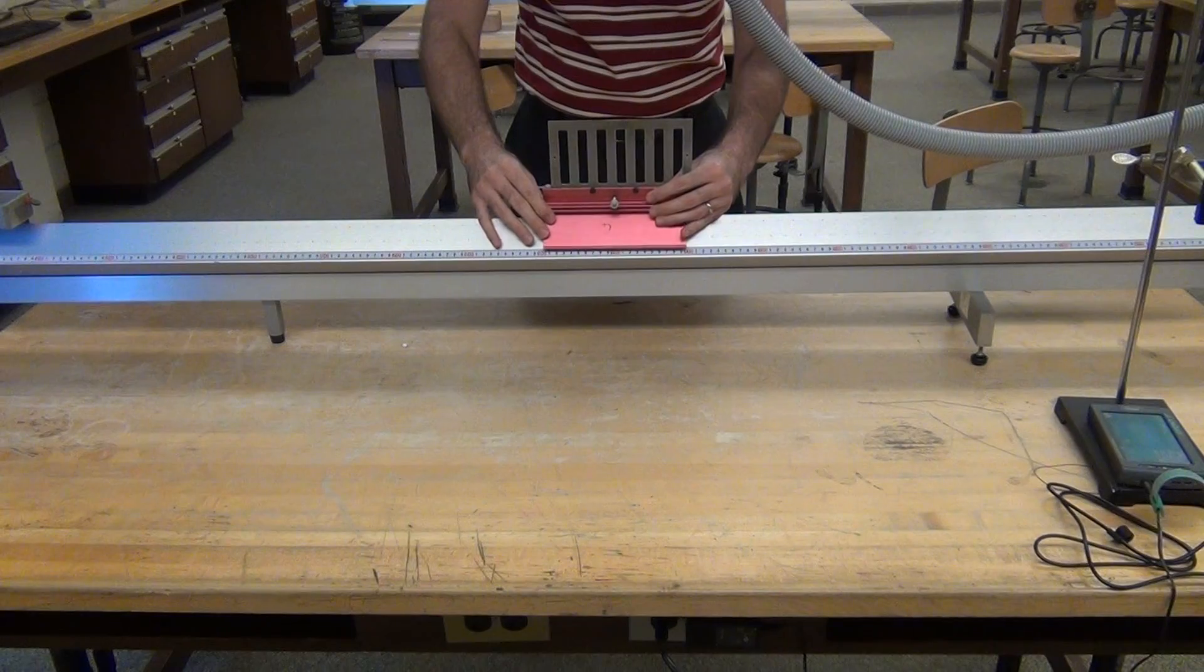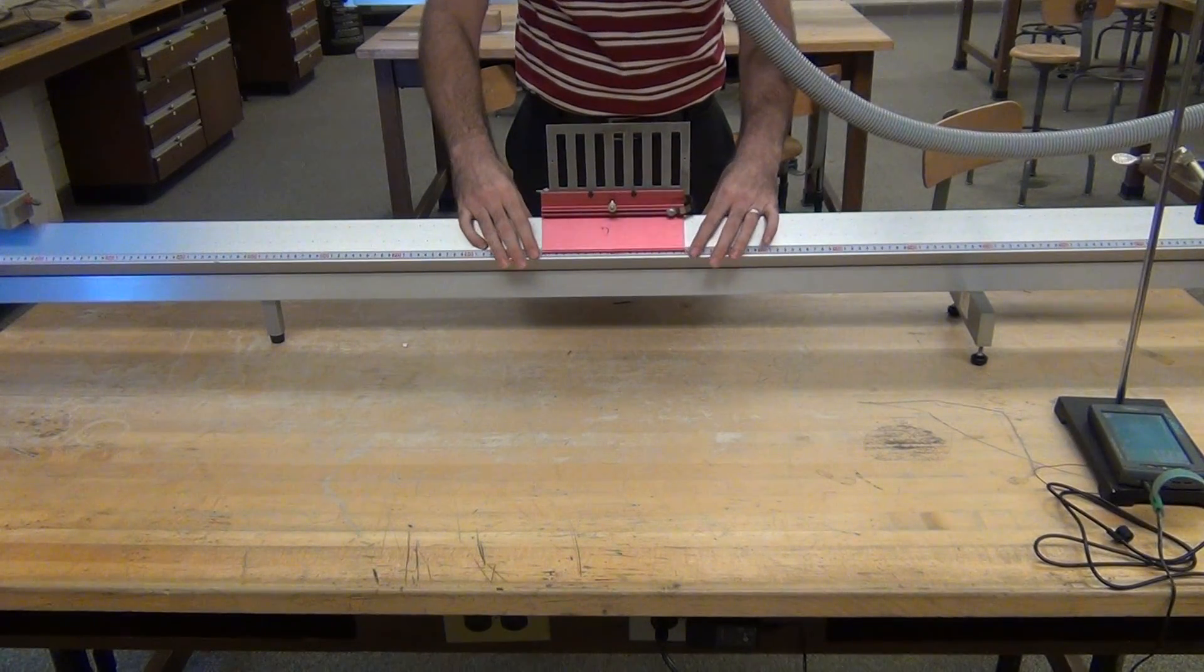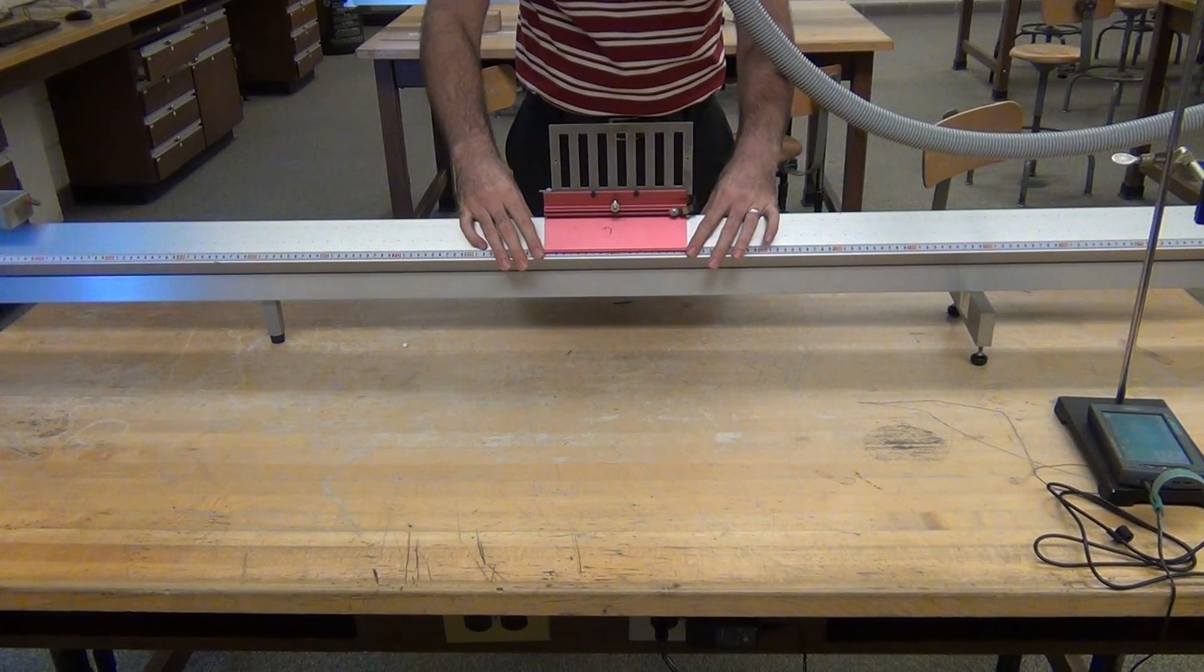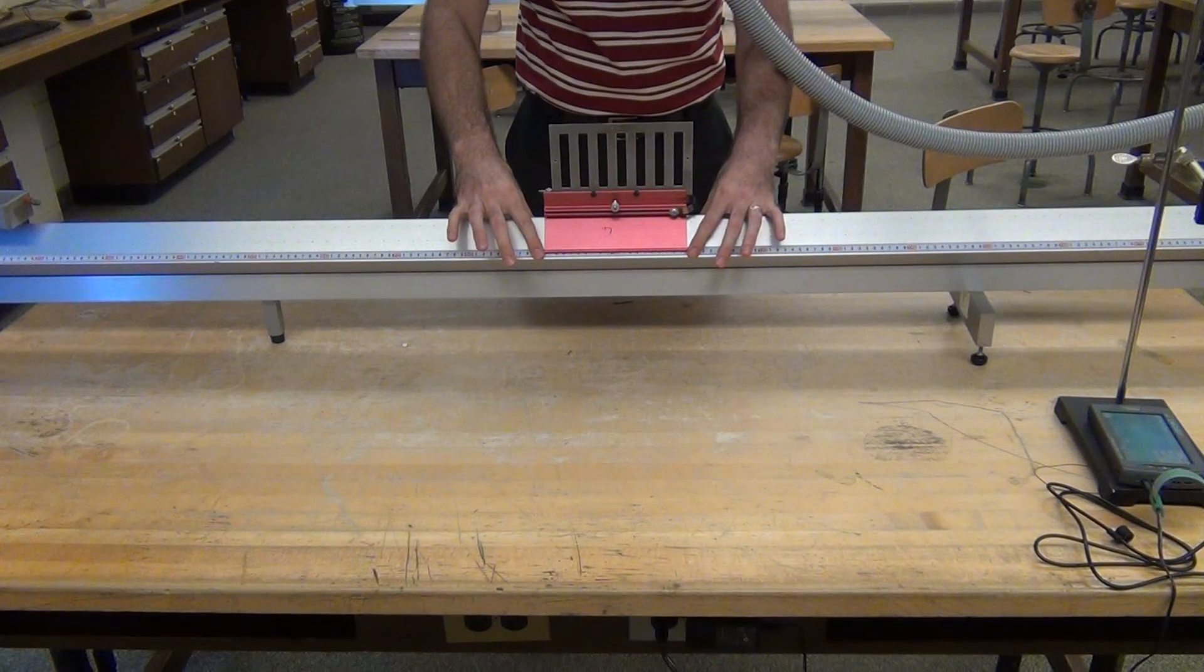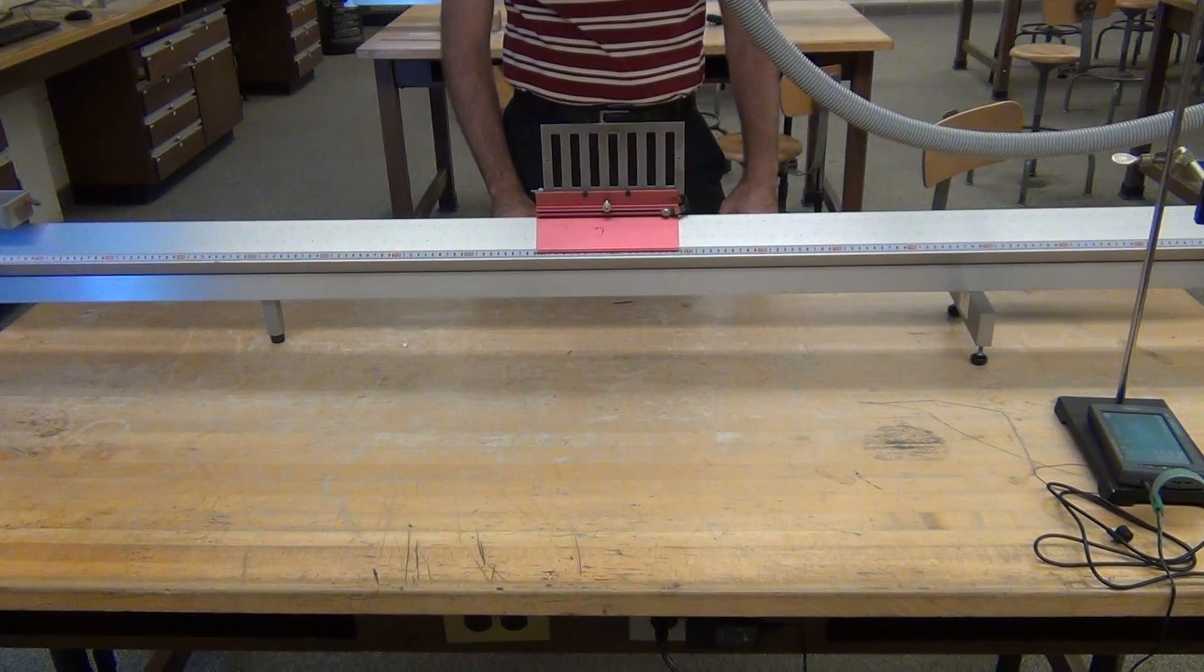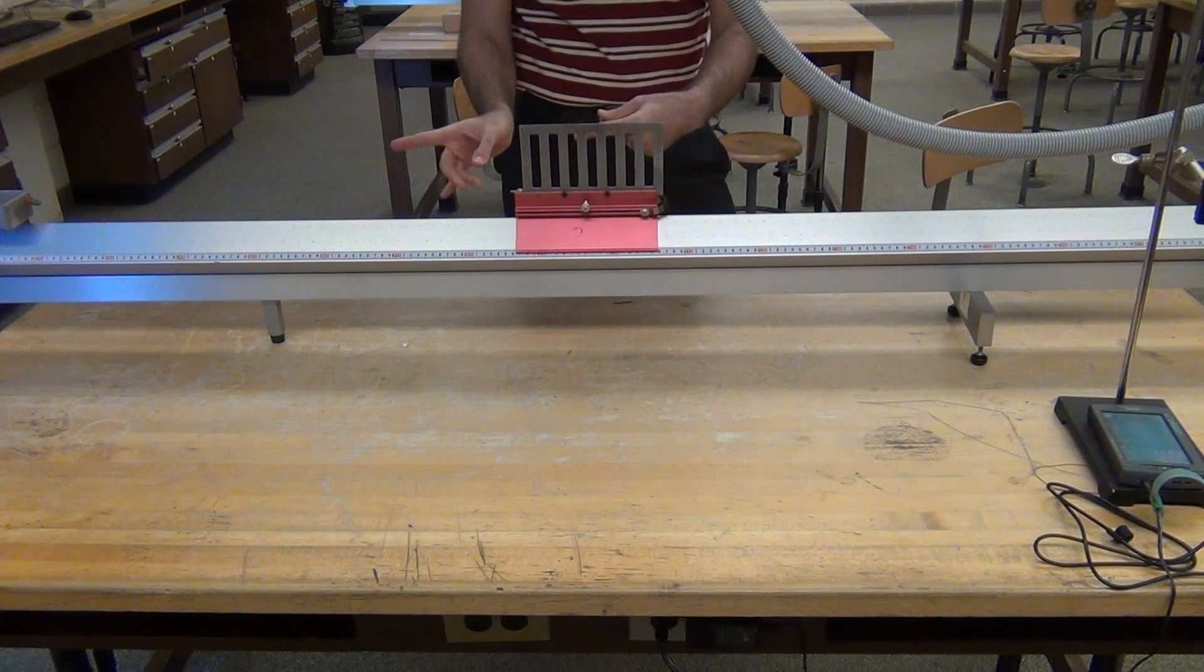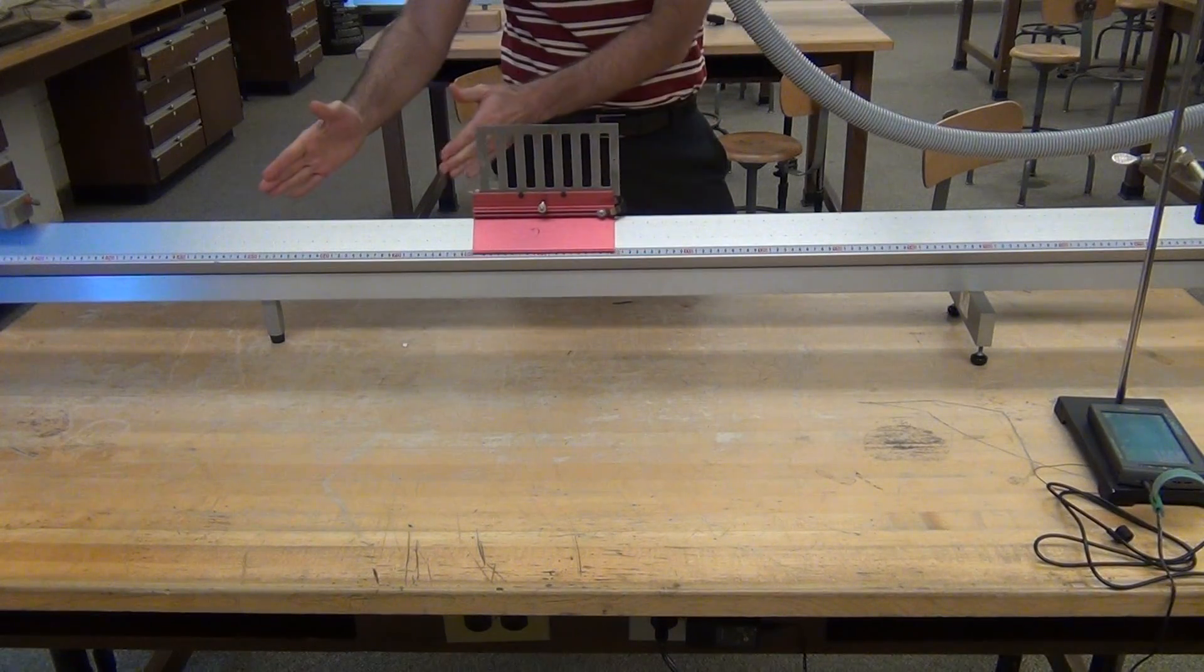I gently place the glider cart on the middle of the air track and make sure that it starts stationary and then see if it moves one way or the other. Because it's sliding to the side,